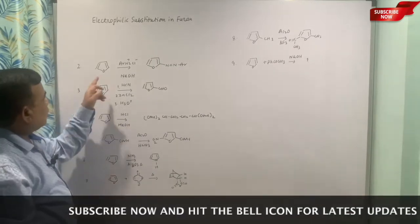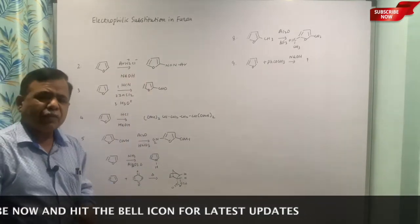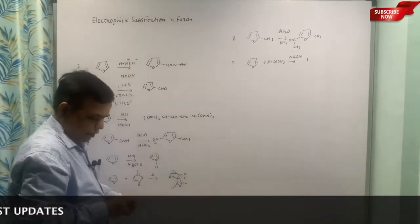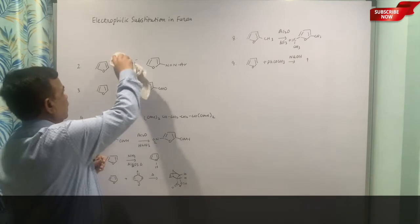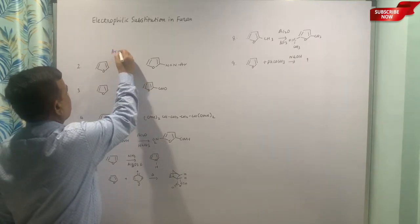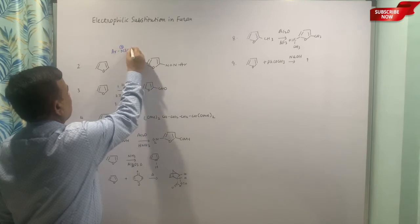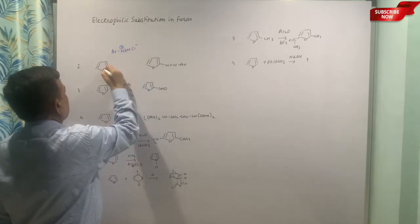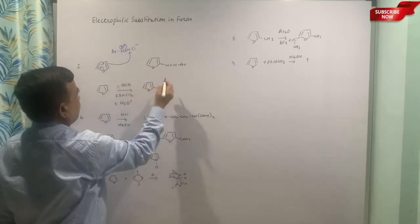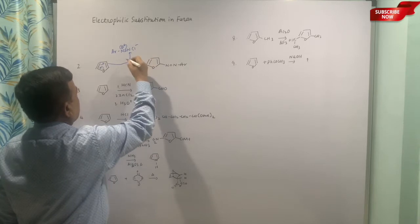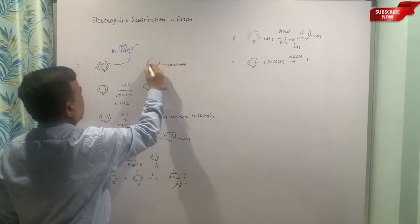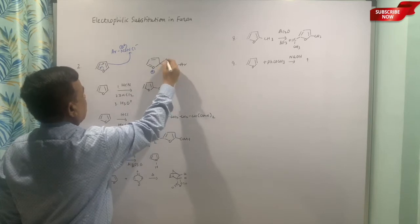The second example is diazonium coupling. Now this aryl diazonium ion can be prepared from primary amine using nitrous acid. This is the electrophile—the actual electrophile we have to write like this: Ar-N≡N⁺ with the counter ion. Once again you can show it like this with positive charge on this nitrogen.